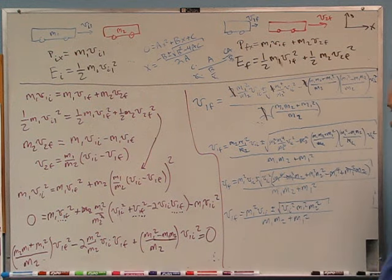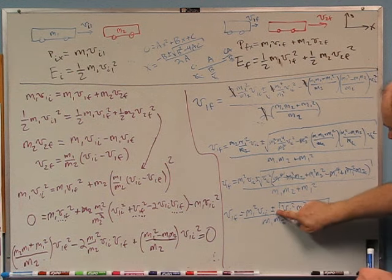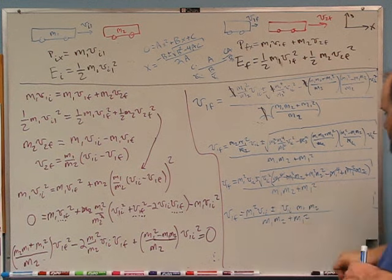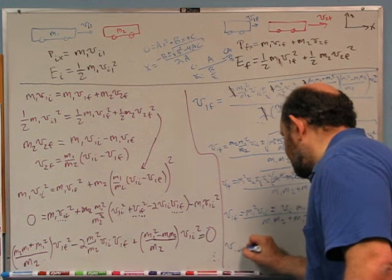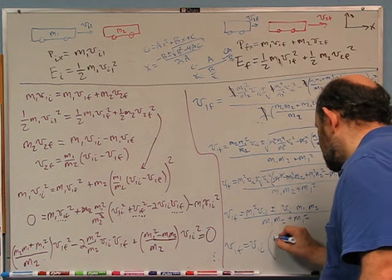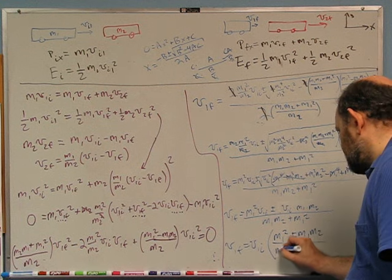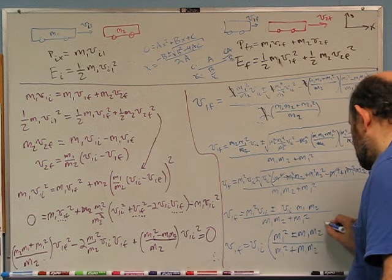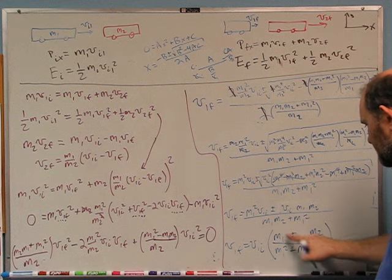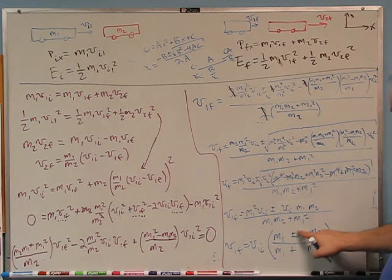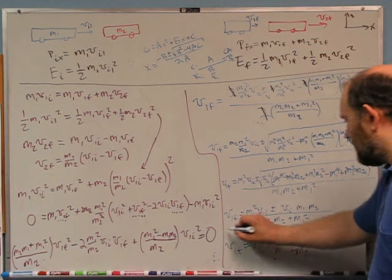After factoring out M1 from numerator and denominator, I'm left with V1F equals V1I times (M1 ± M2) / (M1 + M2). I can factor out the V1I. There's always an M1 in every term so it divides out, leaving V1F = V1I * (M1 ± M2) / (M1 + M2). That's my answer for V1F. Now I need to find the V2F that goes with each solution.